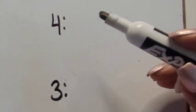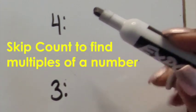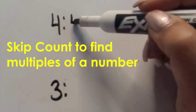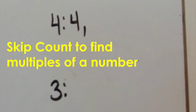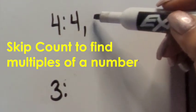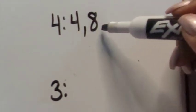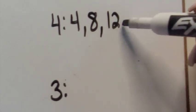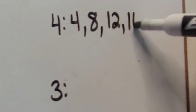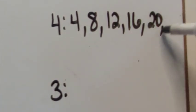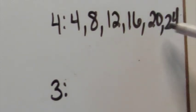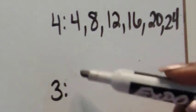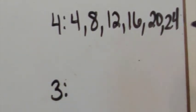Let's look at fours. To find a common multiple, you want students to skip count by four. We start with four and skip count: four, eight, 12, 16, 20, and 24. Of course there are more, but we'll stop there to see what four and three have in common with these first six.